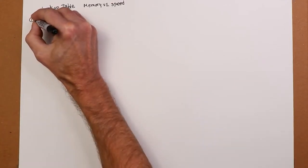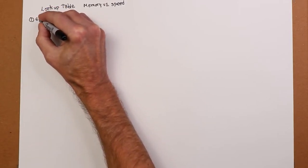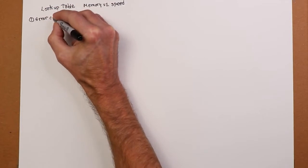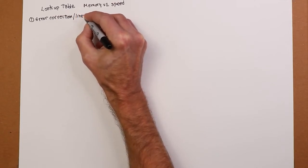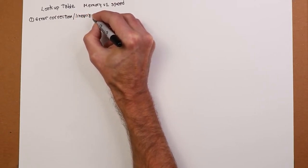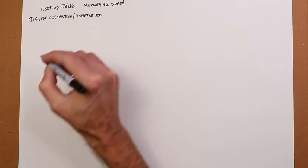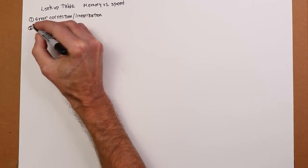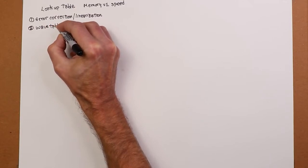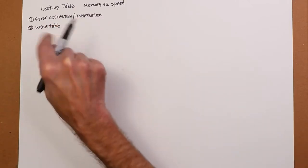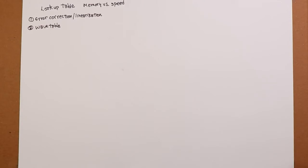There's a couple of really good examples of where you might use this. Number one would be for error correction or linearization of something like a sensor. Now, sensors are not perfect. You would like them to be, but no such luck. Another good example of use would be a wave table.